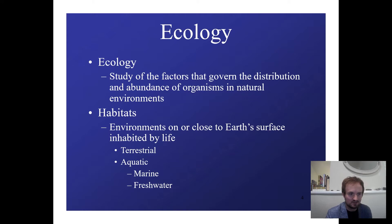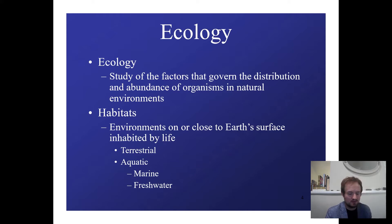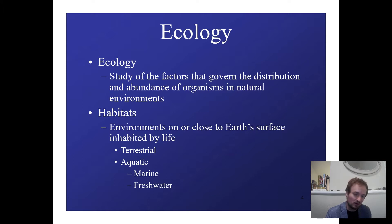Ecology is the study of the factors that govern the distribution and abundance of organisms in natural environments — essentially, what controls where things live and how abundant those populations are. Habitats are environments on or close to the Earth's surface that are inhabited by life. There can be hundreds of different types of habitats, all with different organisms and populations. This includes both terrestrial and aquatic environments, and for the aquatic sector we have marine and freshwater.